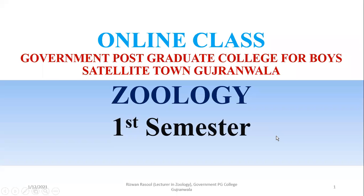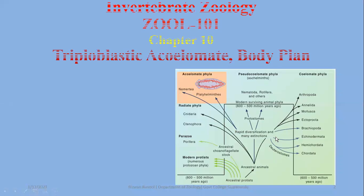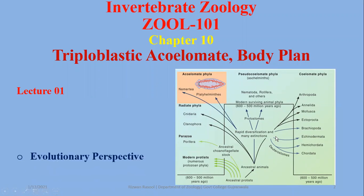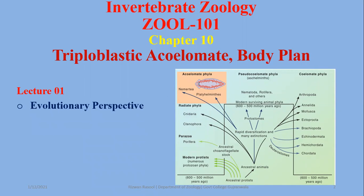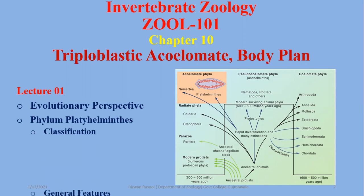In this lecture we are going to start the new chapter — Chapter 10: Triploblastic Acoelomate Body Plan. We are going to discuss the classification of Phylum Platyhelminthes, general features, as well as the evolutionary perspective of the acoelomate body plan.